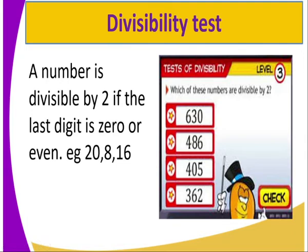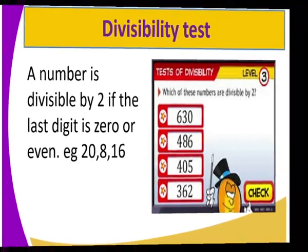So at a quick test, we can have which of these numbers are divisible by 2: 6, 30, 486, 405 and 362. Very fast, we can see 6 is divisible by 2 because its last digit is even. Same as 486 because it is an even number. But 405 is not divisible by 2 since its last digit is neither 0 nor is it an even number.